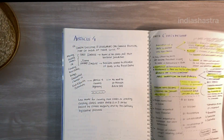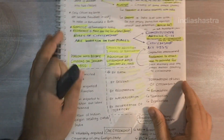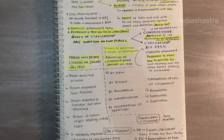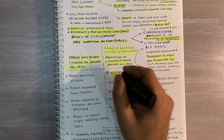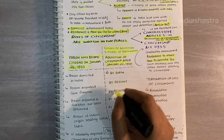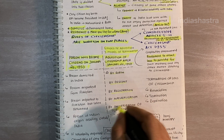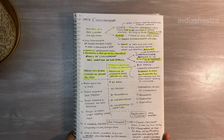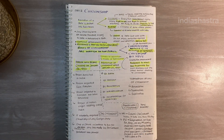The parliament exercised the power conferred by Article 11 and made the Citizenship Act of 1955, which deals with acquisition and termination of Indian citizenship — about which we will learn in the next lesson.